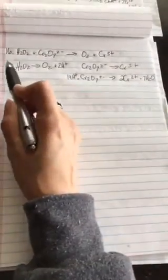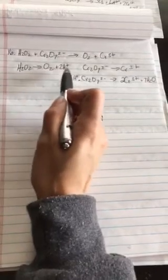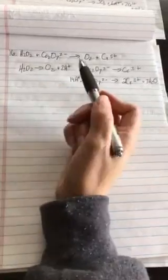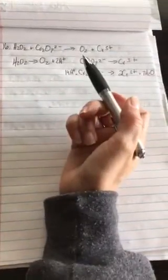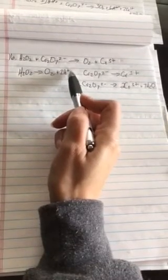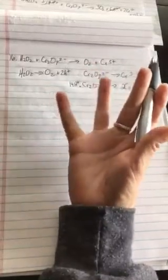So over here I have a net charge of zero. There's no charges on this side. Over here I have a charge of two plus. All I can do is add electrons or subtract. So if I have zero on this side and two pluses, if I add two electrons on the product side, two plus and two minus will equal zero, which is what I need. So let's write that out.